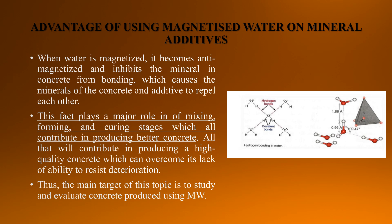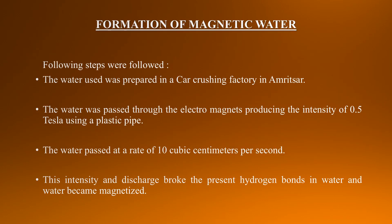Thus, the main target of this topic is to study and evaluate concrete produced using magnetic water. Formation of magnetic water involves the following steps. The water was prepared in a car crushing factory in Amritsar. The water was passed through electromagnets producing an intensity of 0.5 Tesla using a plastic pipe, at a rate of 10 cubic centimeters per second. This intensity and discharge broke the hydrogen bonds present in water, and the water became magnetized.